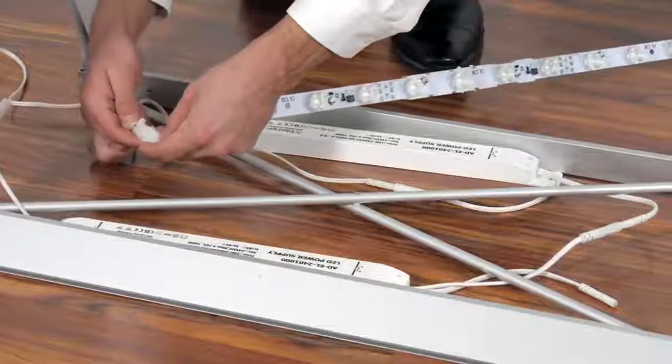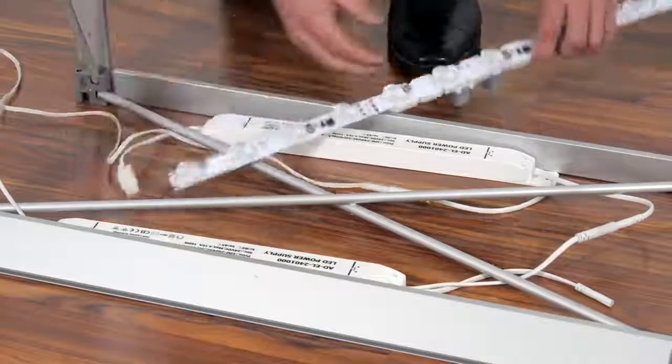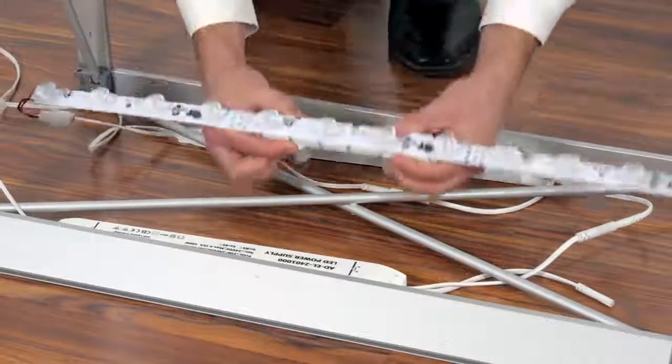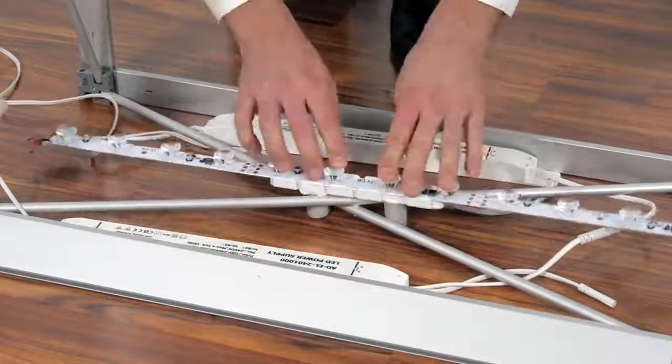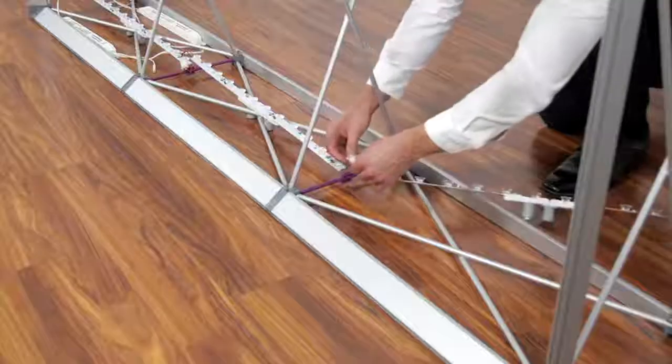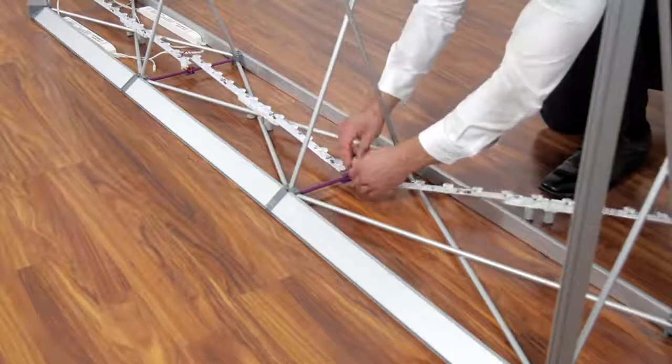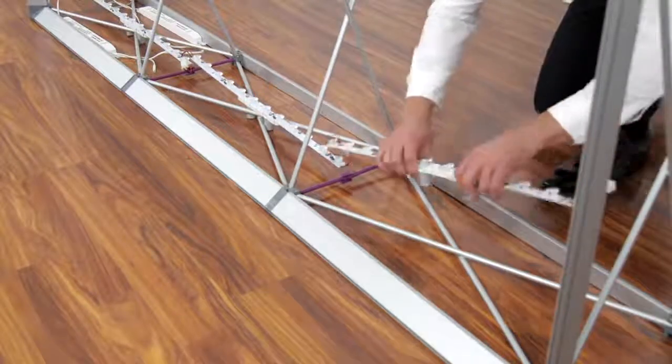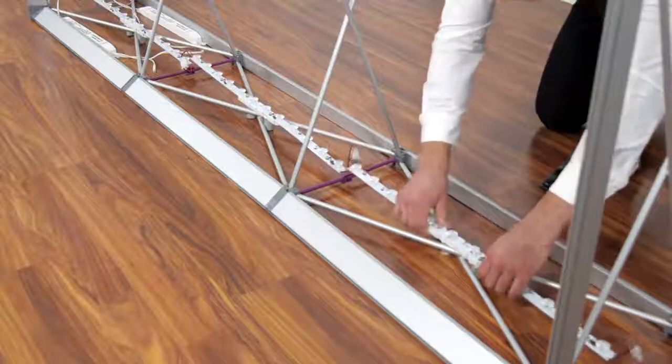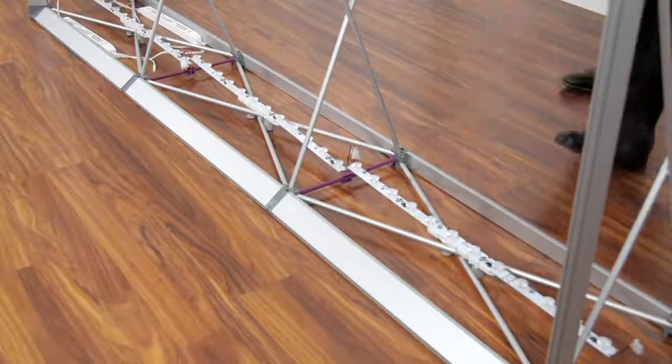For kits with two power supplies, attach the extension cord from the top row of lights to first power supply. Then attach the bottom row of lights to the second power supply. Next, attach the first power supply directly to the second power supply, then finally attach the power cord to the second power supply.